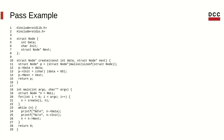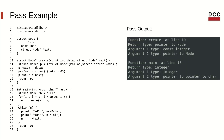Taking this program example, which inserts elements in a linked list and then prints them, the output of our pass will look like this. We can see a function called create at line 10 that returns a type node. Argument one is a const integer and the second is a pointer to a variable of type node. And a function main at line 18 that returns an integer, with argument one of type integer and argument two of type pointer to pointer to char.